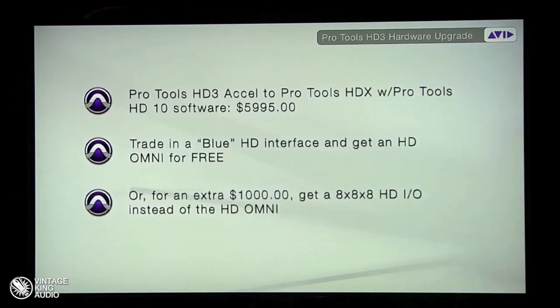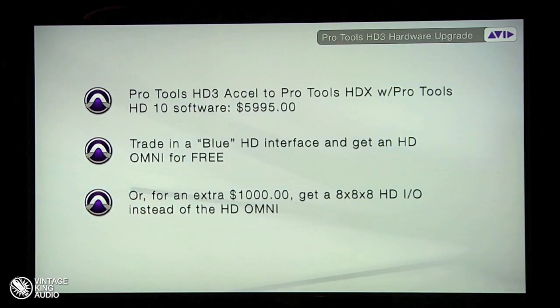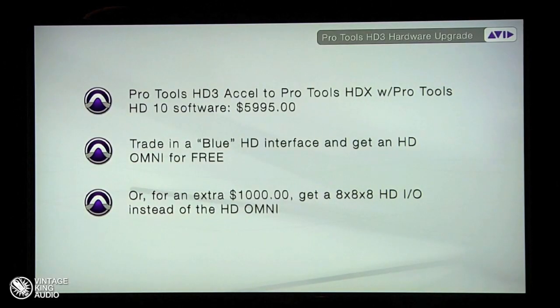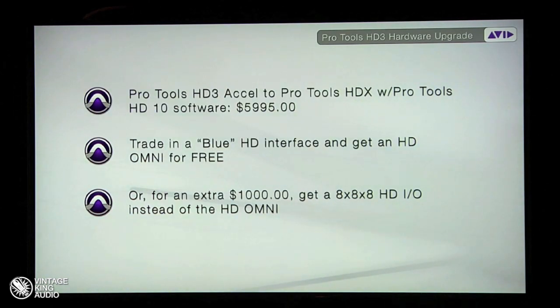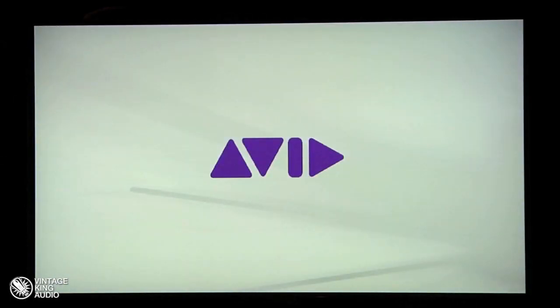Hardware upgrades: if you're on an HD3 Accel system and want to go to Pro Tools HDX — with Pro Tools 10 bundled — it's $59.95. Your HD3 Accel system probably cost $13,000, so that's a pretty decent upgrade. Now, if you have a 192 or a 96 — one of the blue HD interfaces — if you trade it in at the same time, you'll get an Omni for free. Or for an extra $1,000, you get an 8x8x8 HD IO in two rack spaces. The 8x8x8 is eight channels of analog in and out, eight channels of digital in and out. That's pretty much everything we wanted to cover tonight.